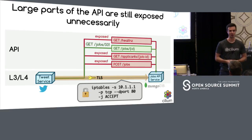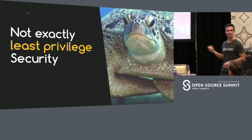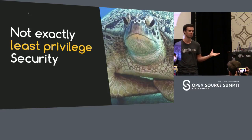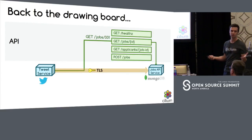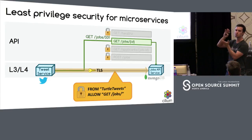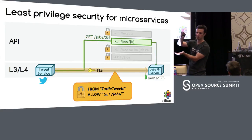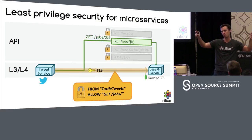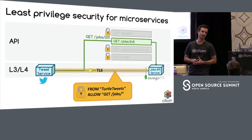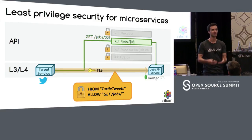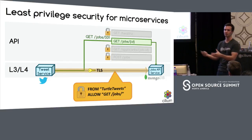On the other hand, the intern could also use this API to create a job if he wants to stay at the company. But this is definitely not least-privileged security. So what can we do? We want something very simple: I want containers to talk to each other, pods to talk to each other, but expose the least amount of API surface possible — least-privileged security at API call level. We allow the tweet service to talk to the jobs API service, but it can only do GET /jobs. If it attempts any other API calls, we block them. Even if the intern screws up, it cannot leak applicant data or create new jobs.